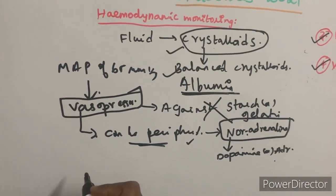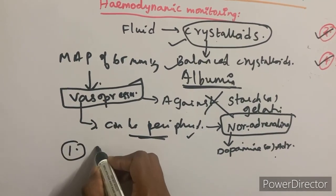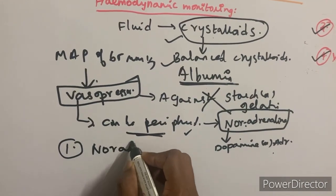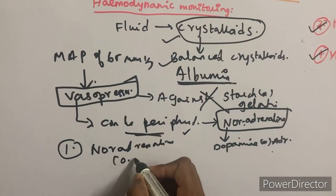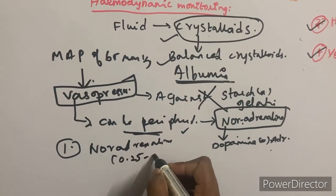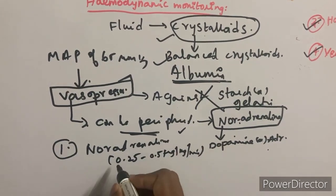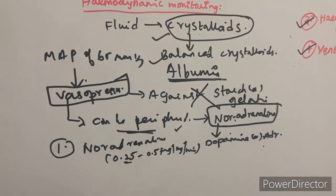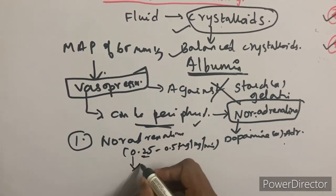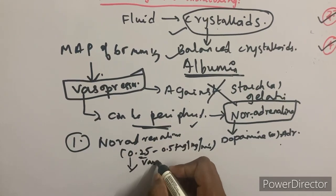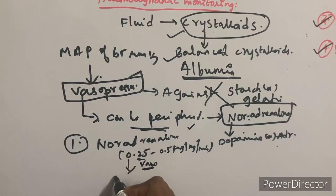If the noradrenaline dose is on an increasing trend and reaches 0.25 to 0.5 mcg/kg/min, once it crosses 0.25 mcg/kg/min, you need to add a second vasopressor to maintain the MAP.